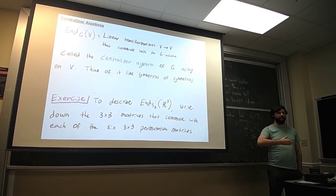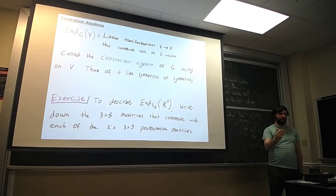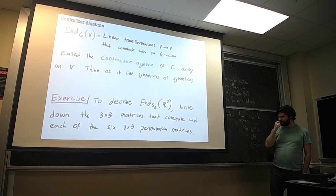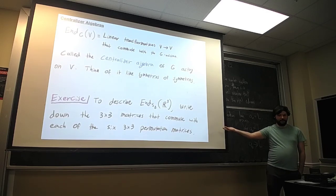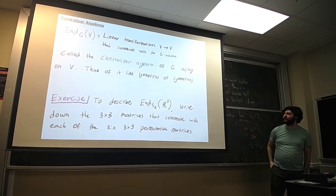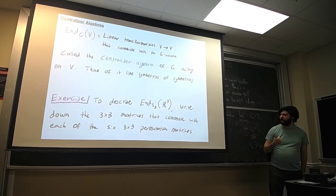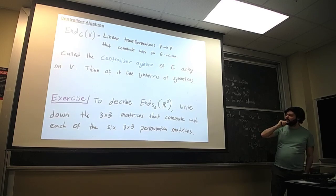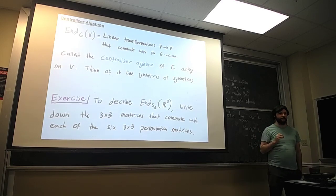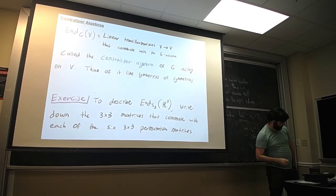As a quick exercise, if you want to get a sense of what these look like, you can write down the centralizer algebra for the first picture I talked about by writing down all 3×3 matrices that commute with each of the six permutation matrices. You end up with a two-dimensional algebra.